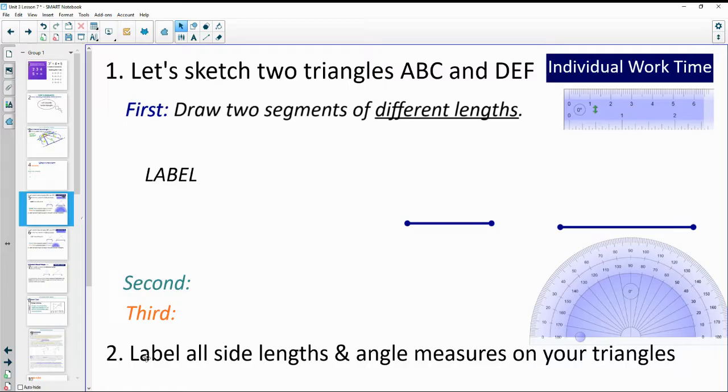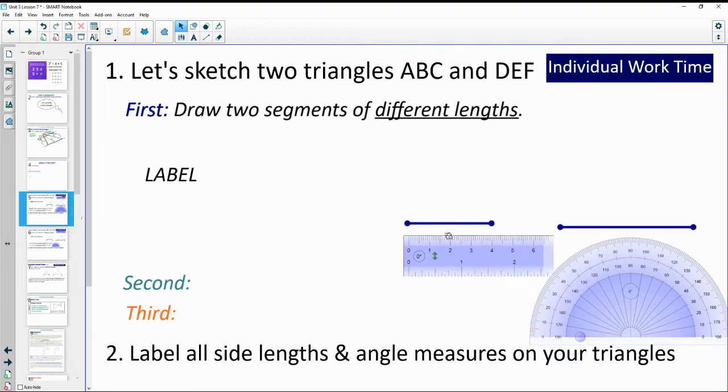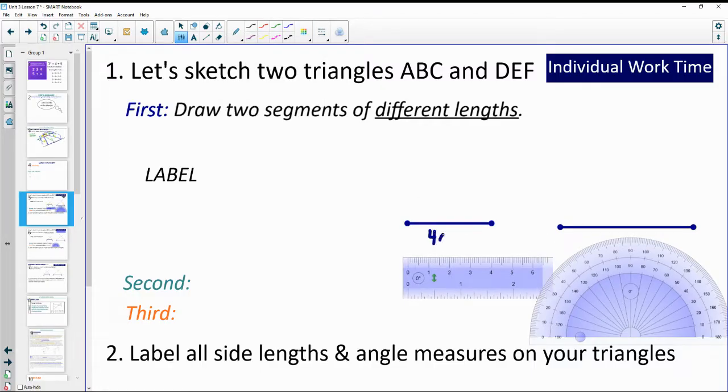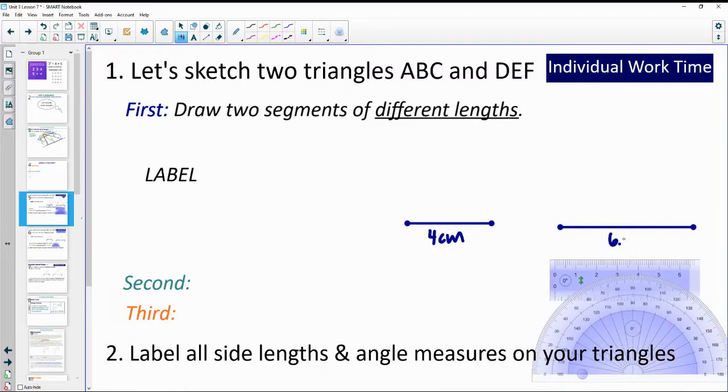The last thing we're going to do is label all the side lengths and angle measures. So if you wanted to measure them as you're drawing them, that would make some sense. So I drew this one at four centimeters. And then this one is about 6.4 centimeters. Let's also label those segments as A, B, and DE.